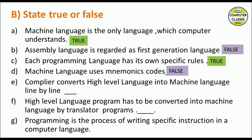Machine language uses mnemonic codes — this is false; assembly language uses mnemonic codes. Compiler converts high-level language into machine-level language line by line — this is false, because converting line by line is the job of the interpreter. The compiler converts the entire program all at once.